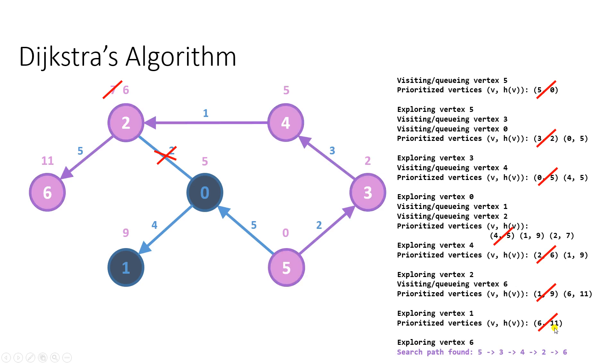And finally, the algorithm found the target vertex and backtracked the search path back to the starting vertex, by visiting 6, 2, 4, 3, and 5. So, that's how Dijkstra's algorithm works. Until the next time, see you.